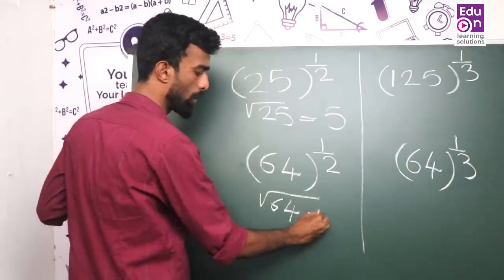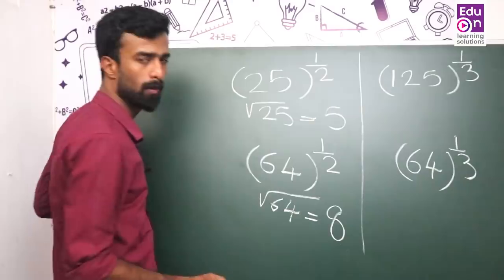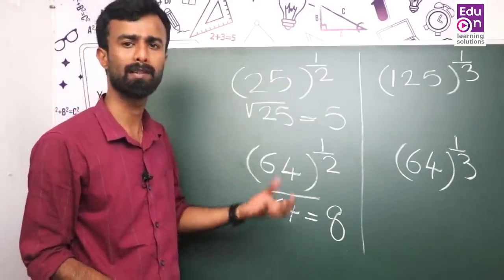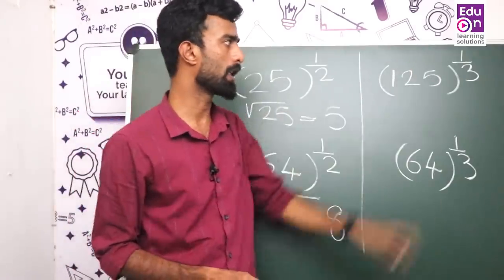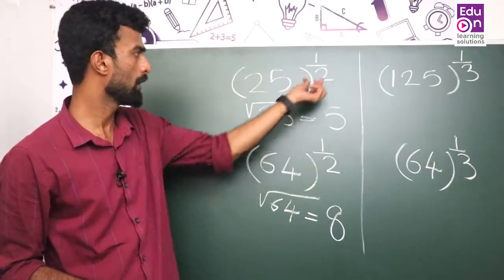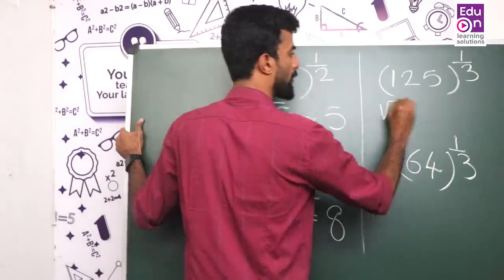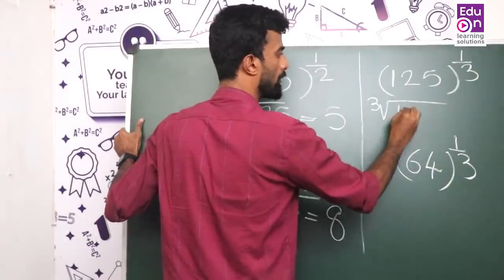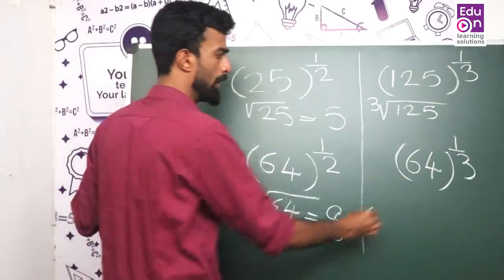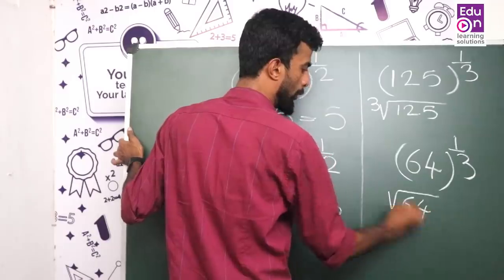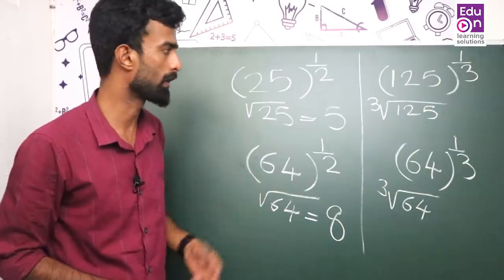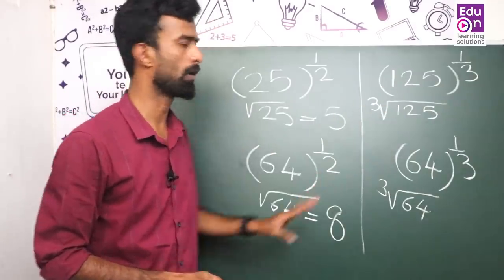64 raised to 1 by 3 — the cube root of 64. If you don't know the root, you can use it in a computer exam. 1 by 3 means cube root, 2 root means square root, 3 root means cube root. Now we have the basic rule: 64 raised to 1 by 3. The cube rule gives us the cube root of 125 is 5.